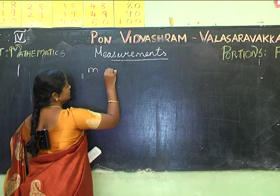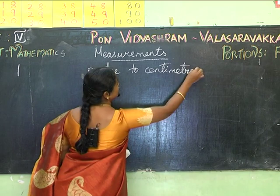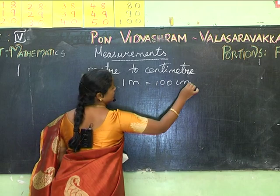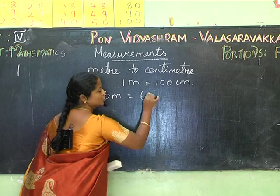Now, converting from meters to centimeters: one meter equals 100 centimeters. If I have 6 meters, then one meter is 100 centimeters, so 6 meters will be 6 × 100 — that is 600 centimeters.